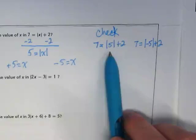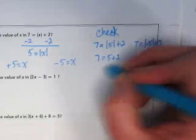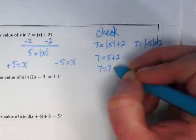When I pull 5 out of the absolute value box, it's still a 5. So 7 is equal to 5 plus 2 and 7 is equal to 7, so that checks.